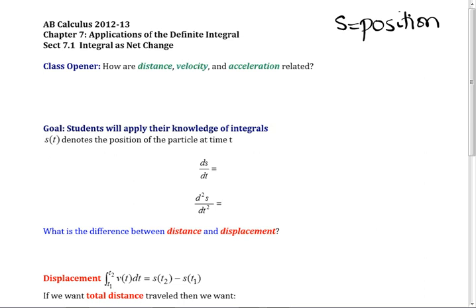How do you find your velocity? It's dS/dt. How do you find your acceleration? It's dV/dt. What we're going to do is start with the acceleration and get to the position. The first derivative is your velocity; the second derivative is your acceleration.